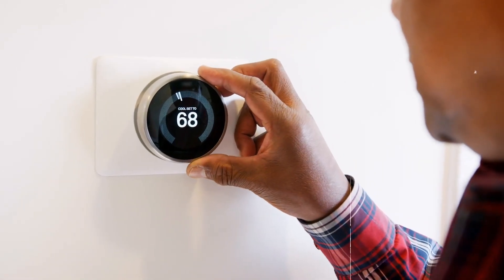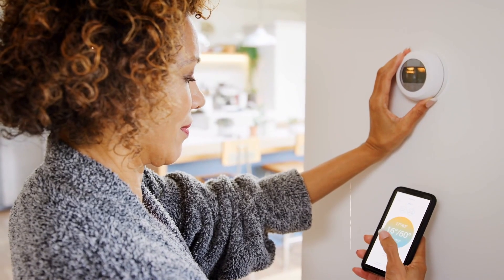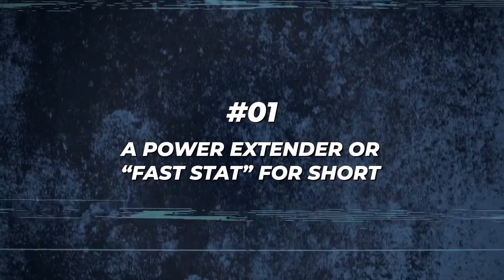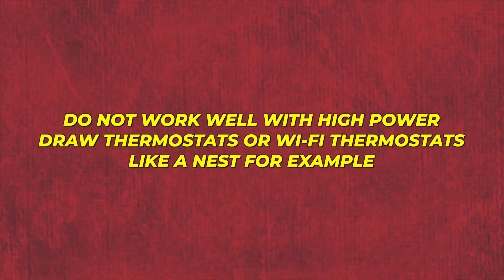Having a five-wire low voltage wire run to your thermostat gives you maximum compatibility with thermostats and thermostat settings. But if you're in a situation where you can't run a new wire, there are a few options. One is called a power extender or fast stat, which adds wires via a relay installed inside the furnace cabinet, allowing you to use an existing two-wire system and convert it into a five-wire thermostat. The downside is they are not very efficient and oftentimes glitchy, and they typically do not work well with high power draw or Wi-Fi thermostats like a Nest, but are an okay option for a basic battery-powered thermostat if you're in a pinch.